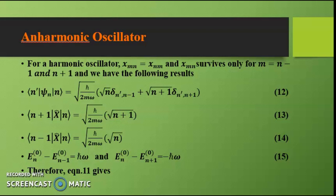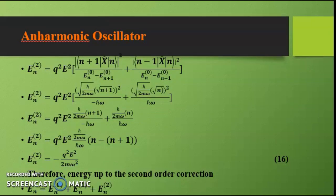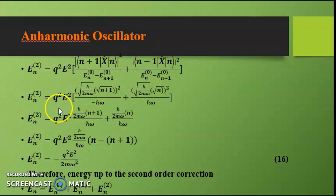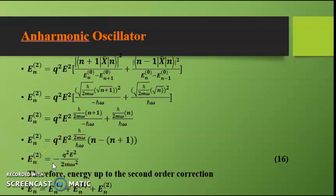Using these expressions in equation 11, only two terms survive in the summation, corresponding to m = n+1 and m = n−1. Substituting the matrix elements and energy differences, we get En² = −q²E²/(2mω²).